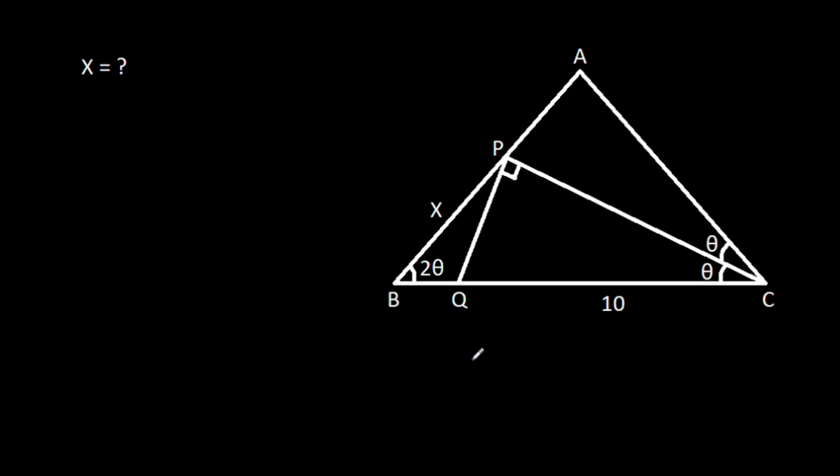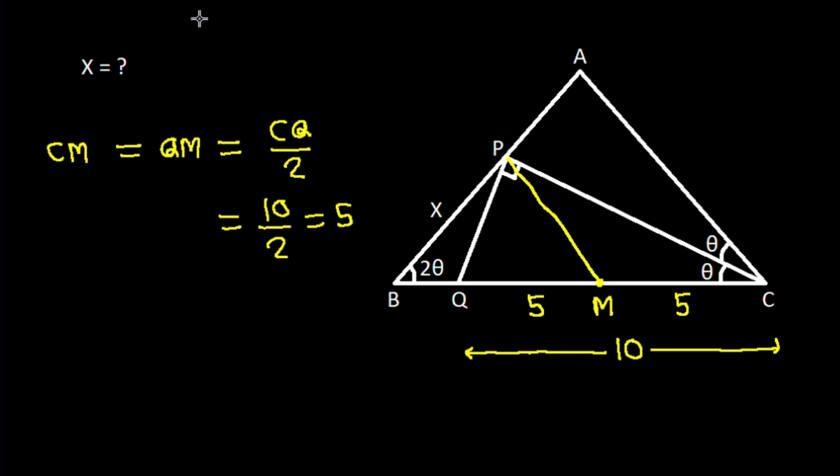We have CQ is 10 and suppose this point is M such that CM is equal to QM that will be CQ over 2, and CQ is 10 over 2 and it is 5. So CM is 5 and QM is 5, and if we join PM then...